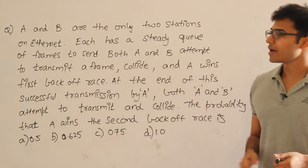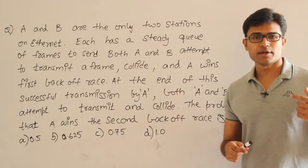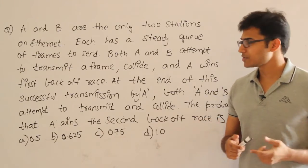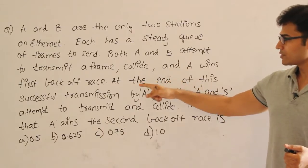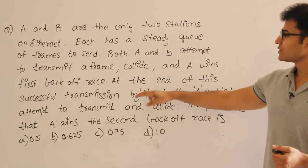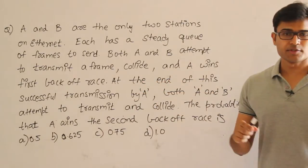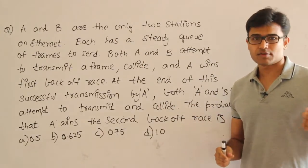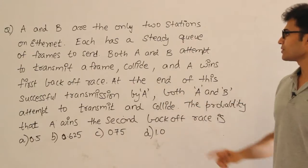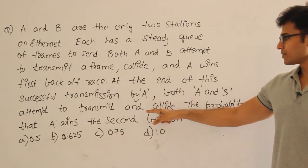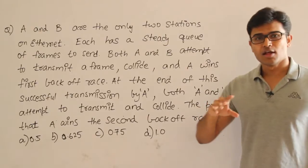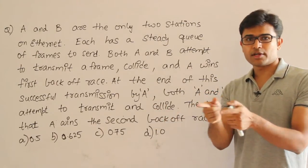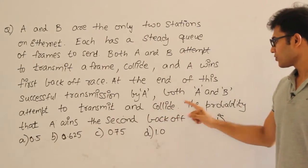And A wins the first backoff race, which means when they played that backoff algorithm, A has won the first backoff race. At the end of the successful transmission by A, which means A won the race and therefore A has sent its packet. After this transmission, both A and B attempt to transmit and collide, which means again after A has sent its packet, again A and B both are trying and again there is a collision.